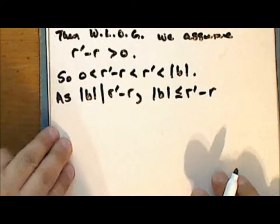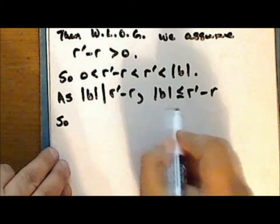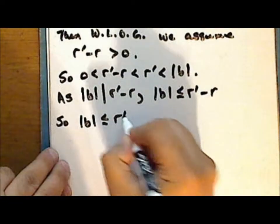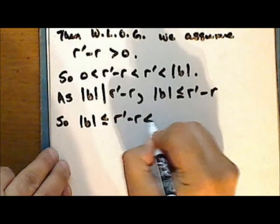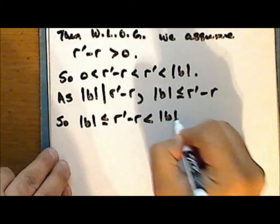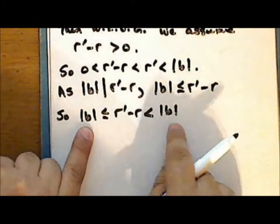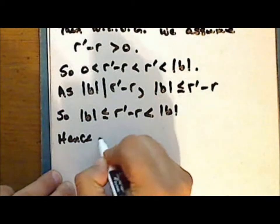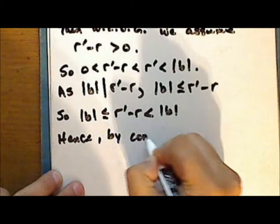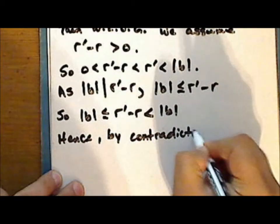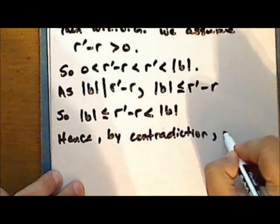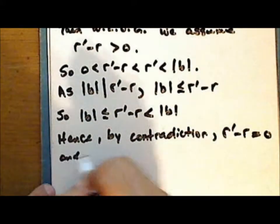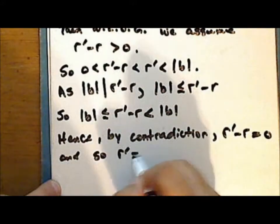And so we have that the absolute value of b is less than or equal to the difference r prime minus r, which is strictly less than the absolute value of b. These two conditions are mutually exclusive, and so by contradiction, r prime minus r equals zero, and so r prime equals r.